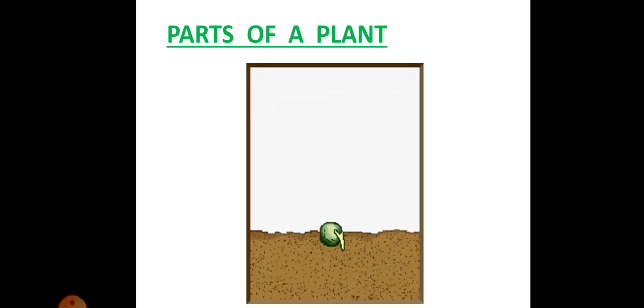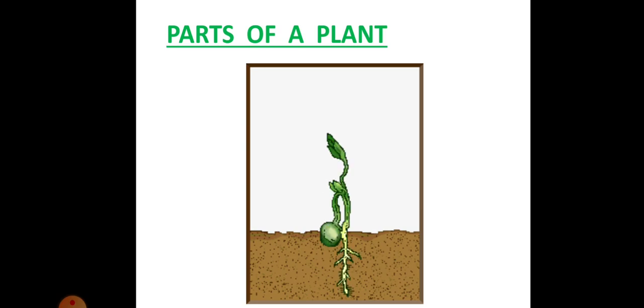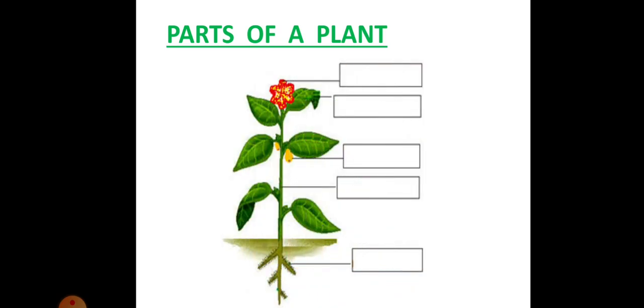So we have learnt the types of plants. Now we have the parts of a plant. Let us watch this. You can see a seed. First the roots come out and then the shoot. The part which grows under the ground is the root. And the part which grows above the ground is the shoot. Did you watch? Now let us do this. Here is a plant for you. There are five boxes given. You want to name the parts of a plant. Let us check.